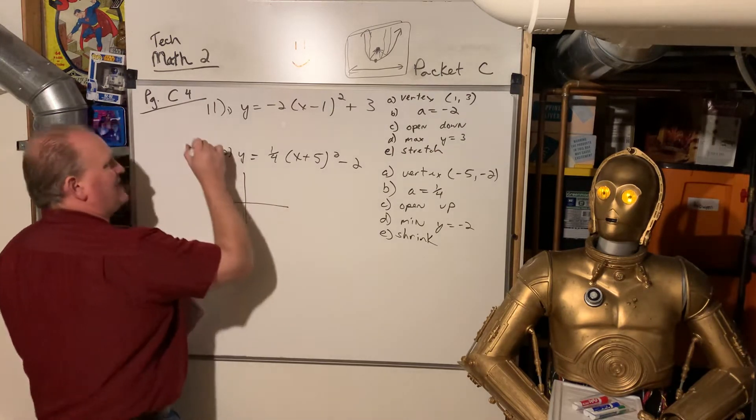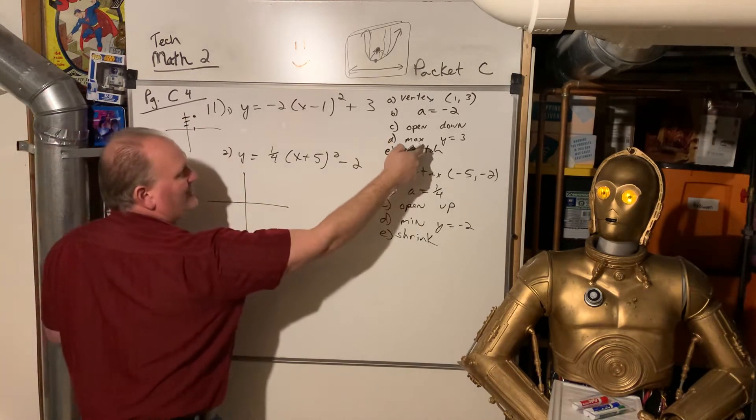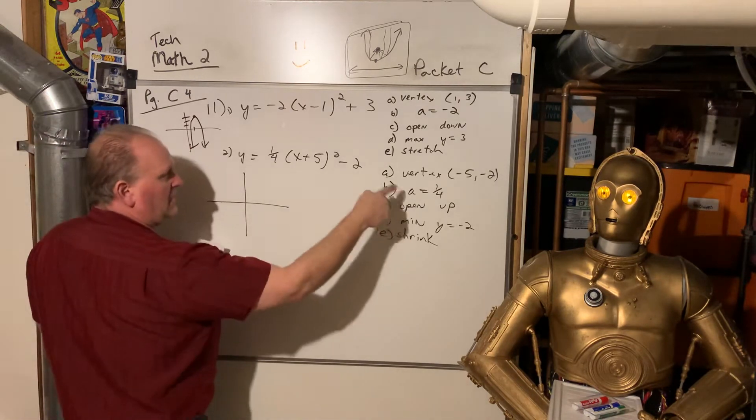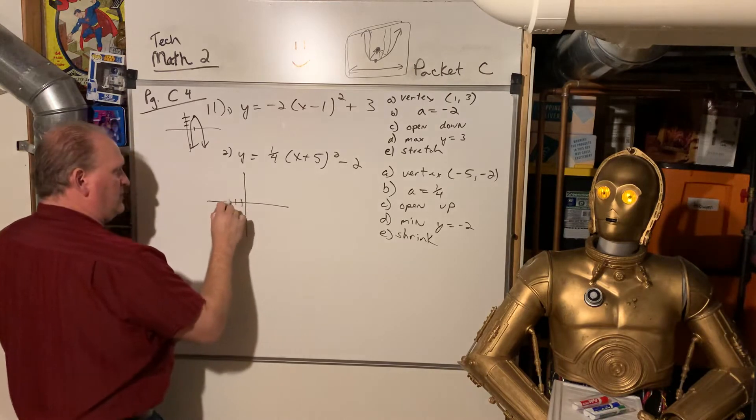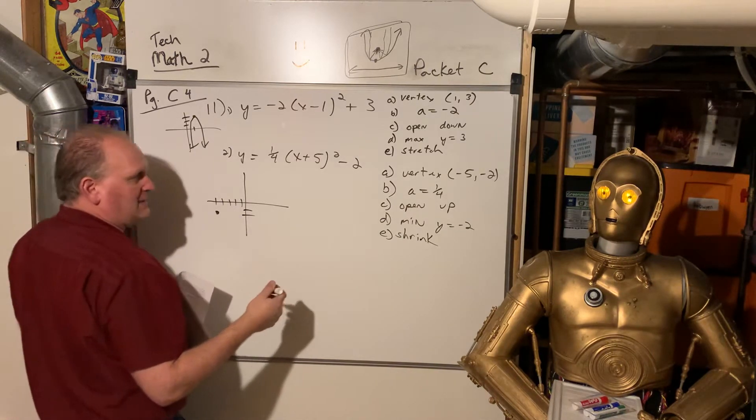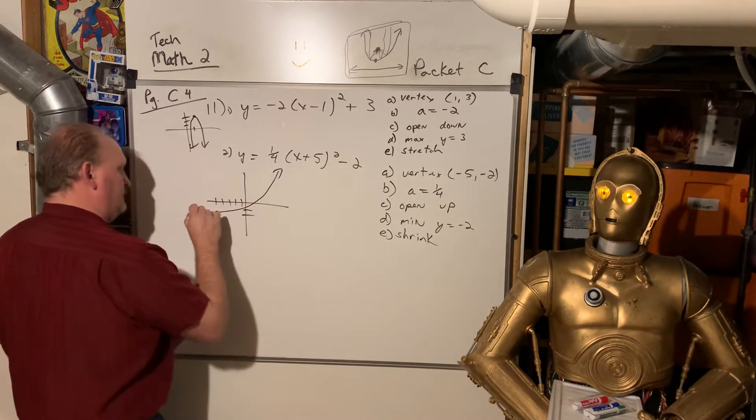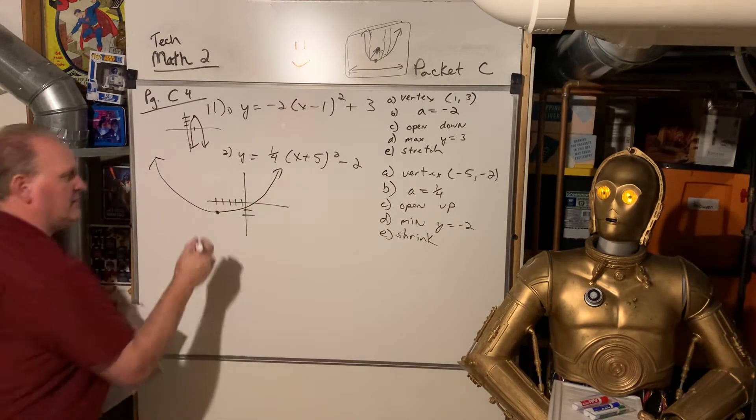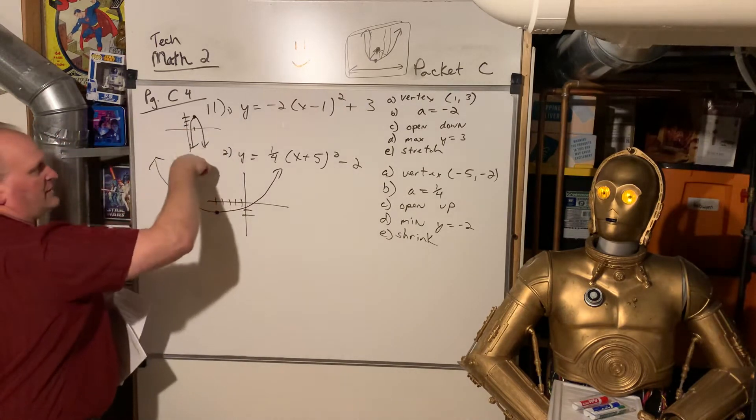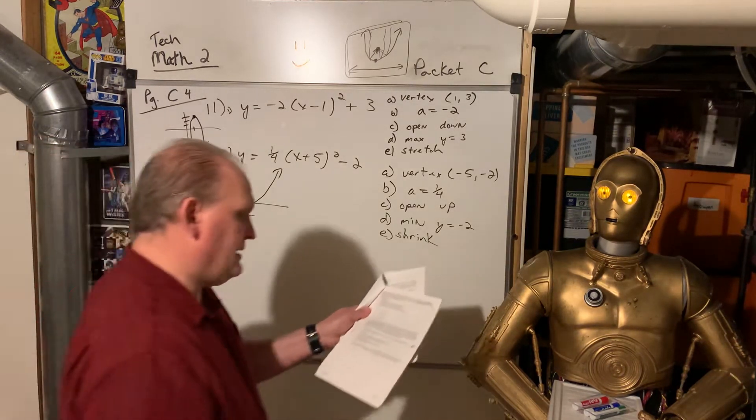So now look, if we wanted to sketch these with this information, we could get a sketch going. If we know the vertex is 1, 3, we know it's skinnier and it opens down. You kind of draw a skinnier vertex, or a skinnier graph. This one, vertex is negative 5, negative 2, just a sketch. I'm not really looking at where it intercepts the x and the y axis. It opens up, and it's wider than normal. This is the minimum point right there. That is the maximum point.